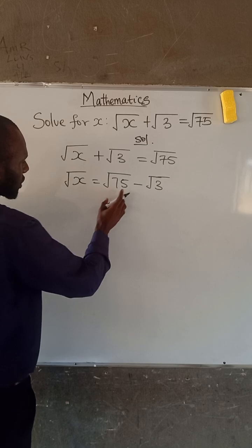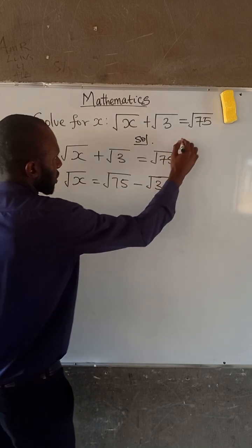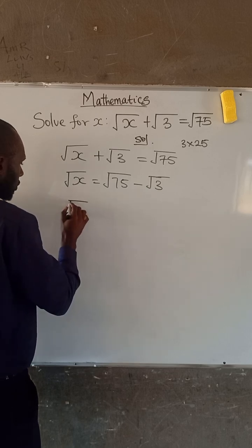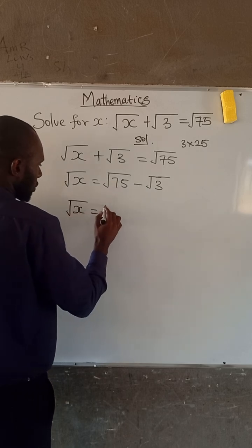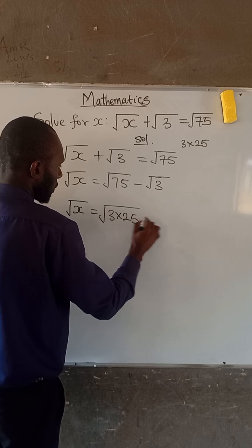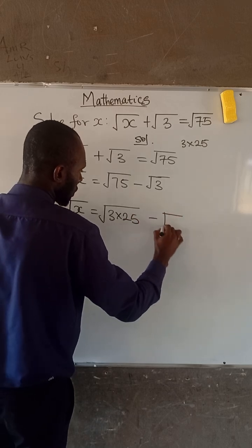So you know that 75 can be expressed as 3 times 25. So therefore, we have that root x is equal to root of 3 times 25 minus root 3.